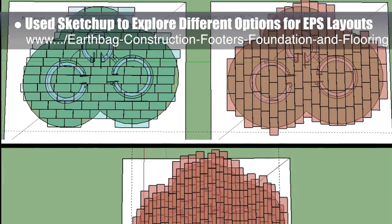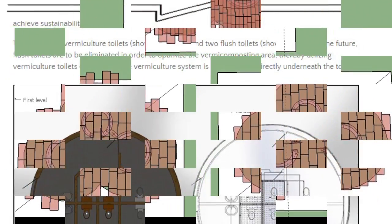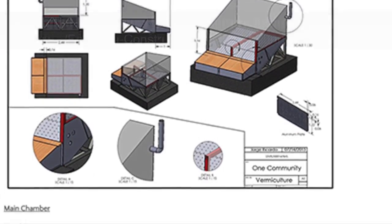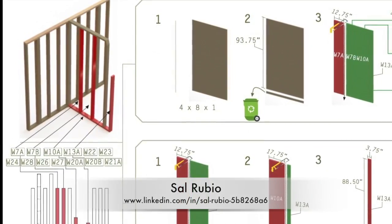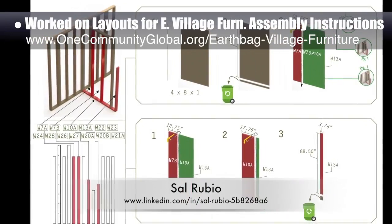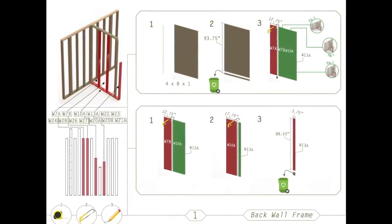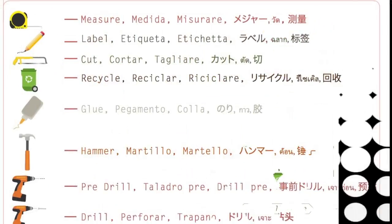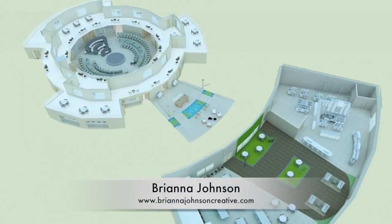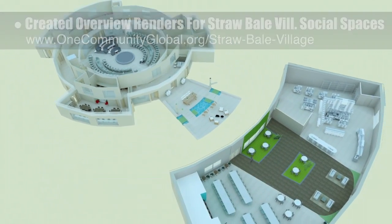Behind the scenes we also used SketchUp to explore different options for EPS layouts for insulating the ground around the domes, and we created new and clearer images for the vermiculture bathroom open source page. Sal Rubio, industrial designer, also completed his final week of volunteering helping on the earthbag village Murphy bed furniture assembly instructions — his 14th week of helping. The final product of our collaboration includes layouts for the intro pages to each section and the tools page planned for the intro to the entire instruction set. Brianna Johnson, interior designer, also created two new overview renders focused on the straw bale village pod 2 social spaces.